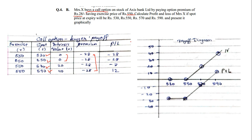We also have to show this in the payoff diagram. On the x-axis we note all spot prices: 530, 550, 570, 590. Intrinsic value and profit and loss will be on the y-axis. We always start by plotting the intrinsic value first: at 530 it was 0, at 550 it was 0, at 570 it was 20, at 590 it was 40. Then we mark the P&L: negative 28 at 530 and 550, negative 8 at 570, and positive 12 at 590.